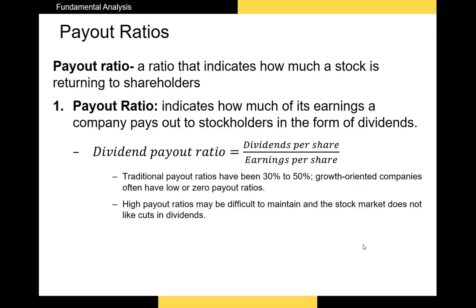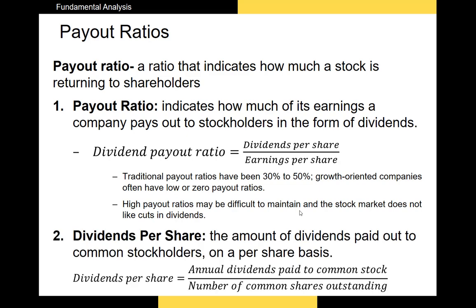Payout ratios tell us what portion of earnings is distributed to shareholders. The payout ratio is dividends divided by earnings per share — historically between 30% and 50% for dividend-paying firms. Growth-oriented firms like Netflix or Tesla typically have a zero payout ratio. A high payout ratio generally means the firm is not growing as fast since it's distributing all its earnings to shareholders. The dividend payout ratio is dividends per share divided by shares outstanding.